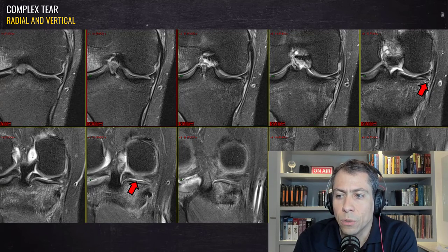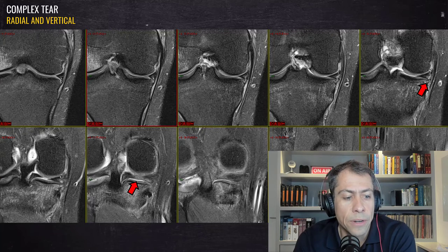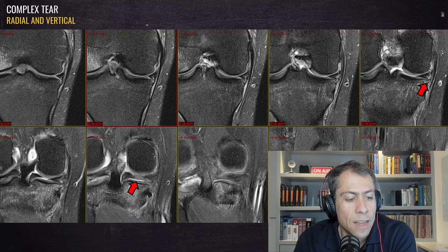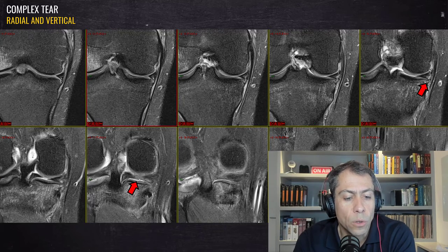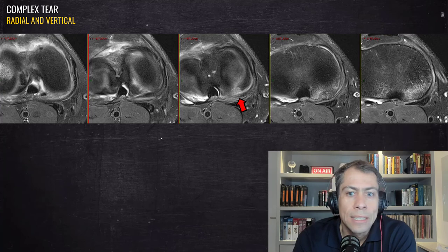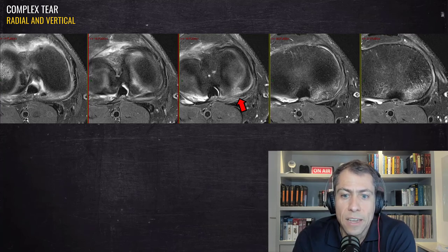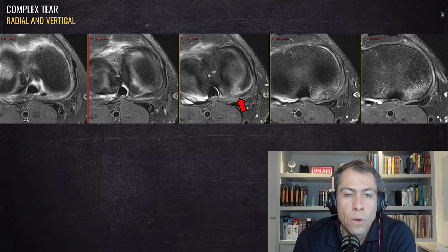On the coronal plane we can appreciate that the vertical longitudinal tear goes further anteriorly into the meniscal body, and here in the area of the posterior horn of the medial meniscus we can see a partial cleft sign caused by the partial radial tear. The meniscus is blurred in the region of transition between the radial tear and the periphery of the meniscus. On the axial plane — which is amazing for seeing this complex tear — we can clearly see the longitudinal vertical tear and the radial partial tear.